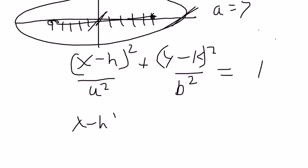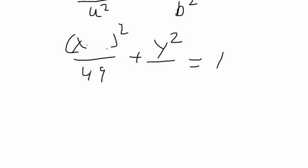So I'll get x minus h squared over 49 plus y, I know h is 0, we're at the center, squared. I know k is 0, we're at the center. So we just need to figure out what b squared is.